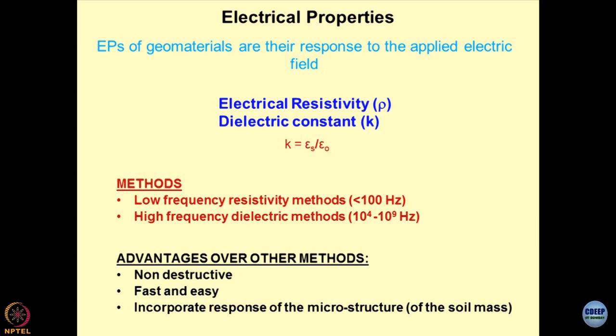What is the advantage of pushing AC at a very high frequency into a material? Why do you require very high frequencies of current to be pumped into the sample? The answer is that when the AC frequency is more, the passage of current becomes easier as compared to low frequency current. This concept has been utilized to analyze the electrical signatures of the materials.